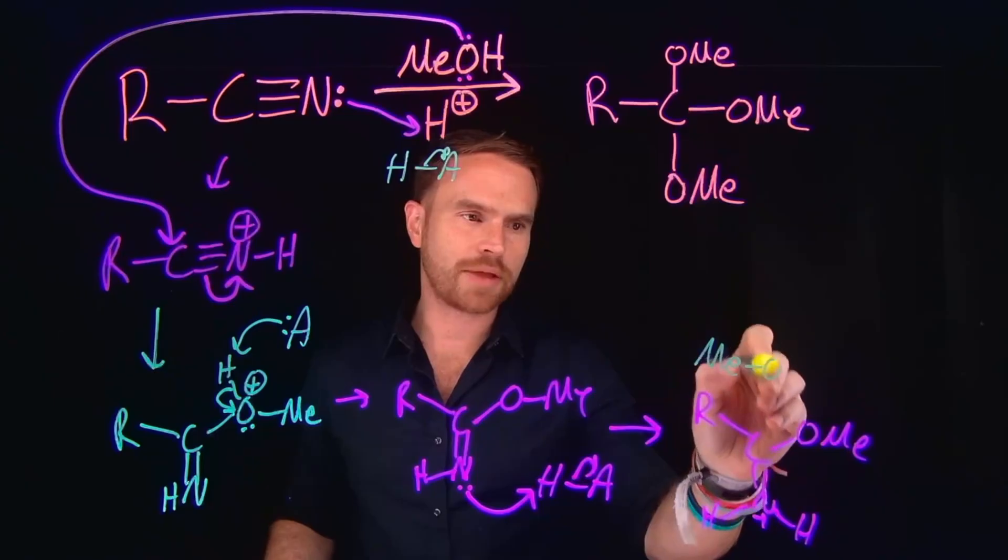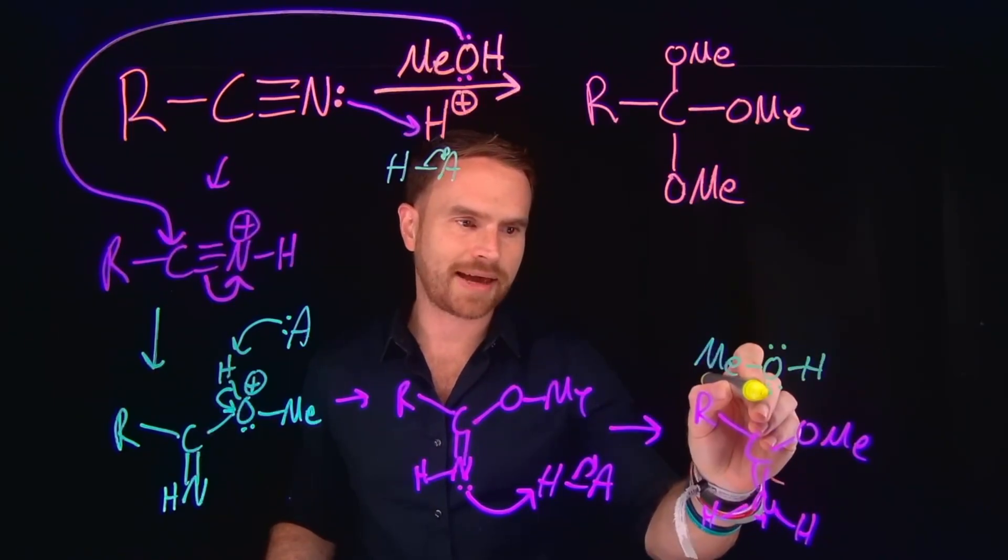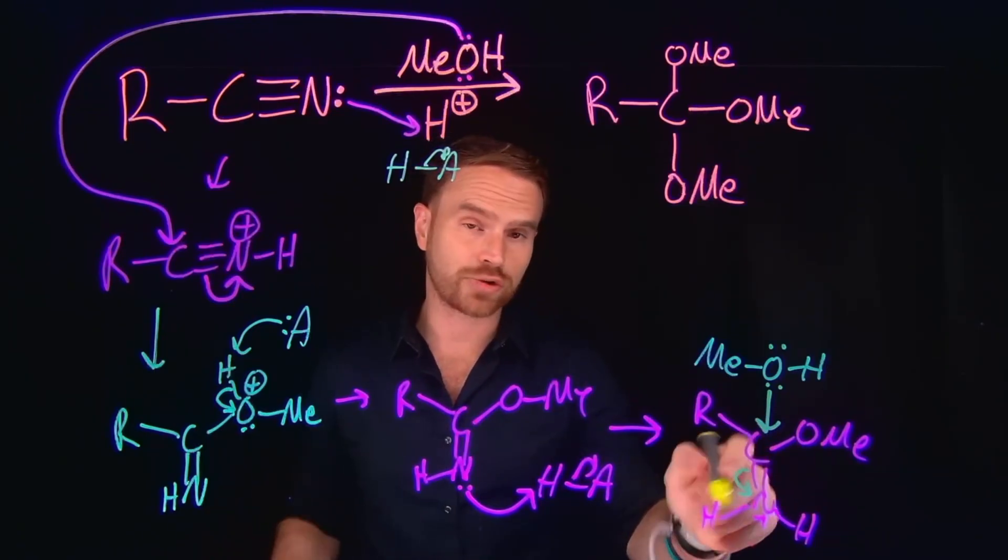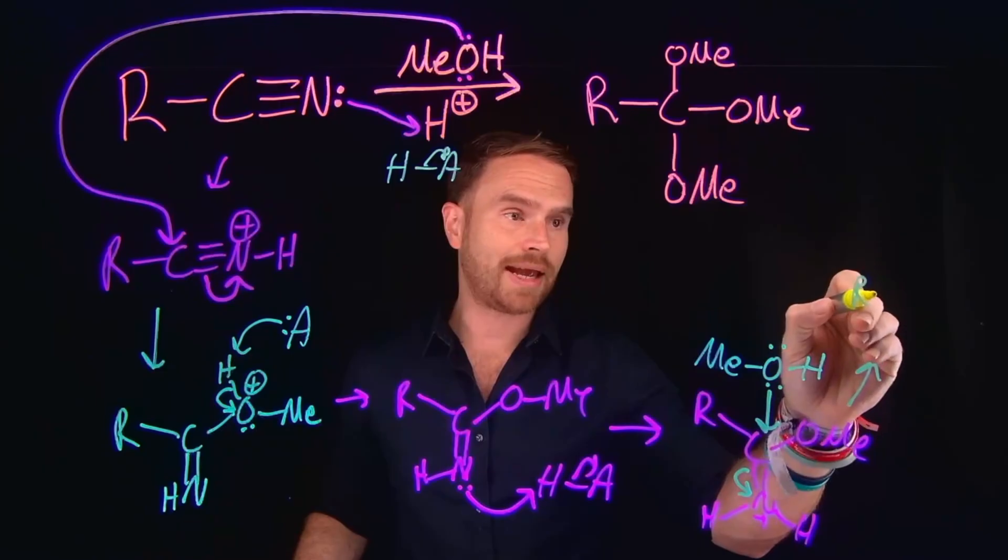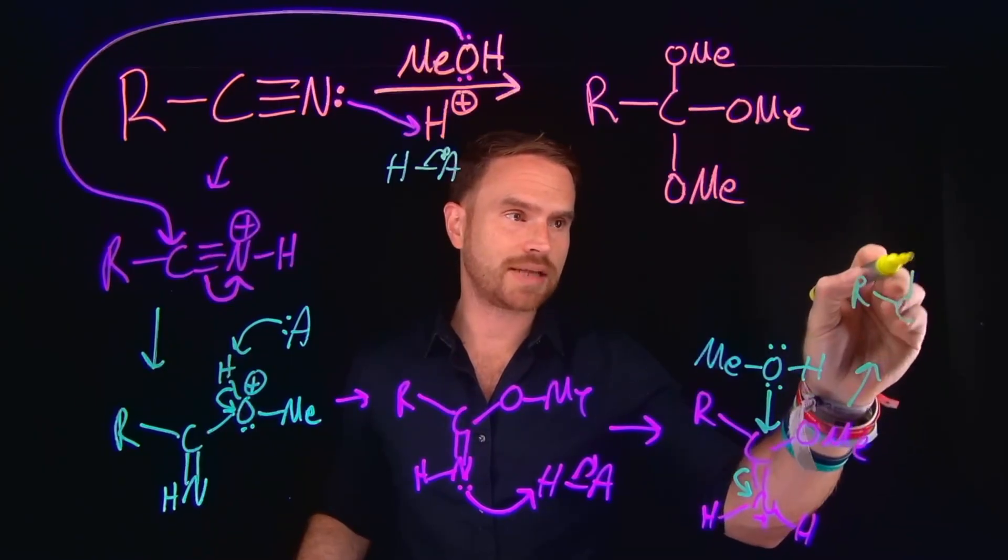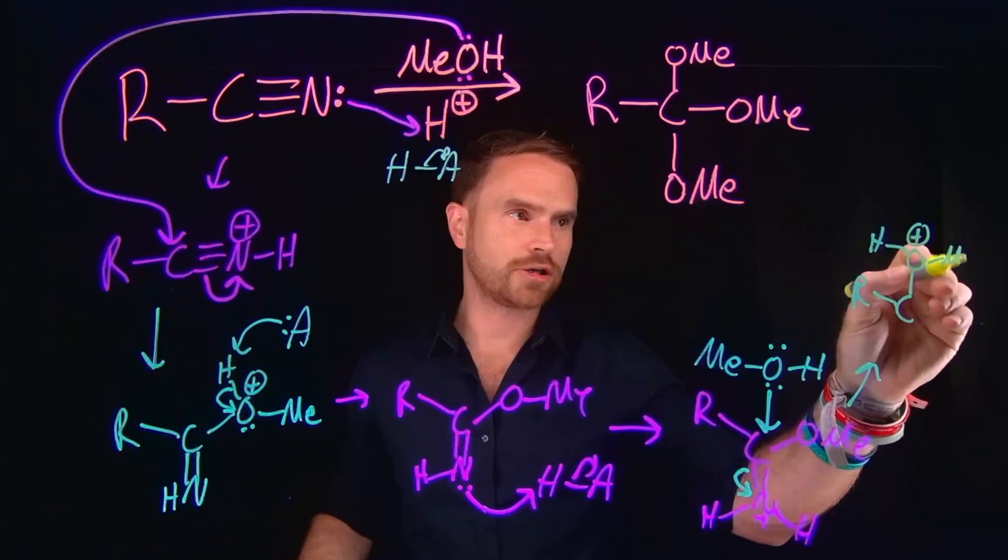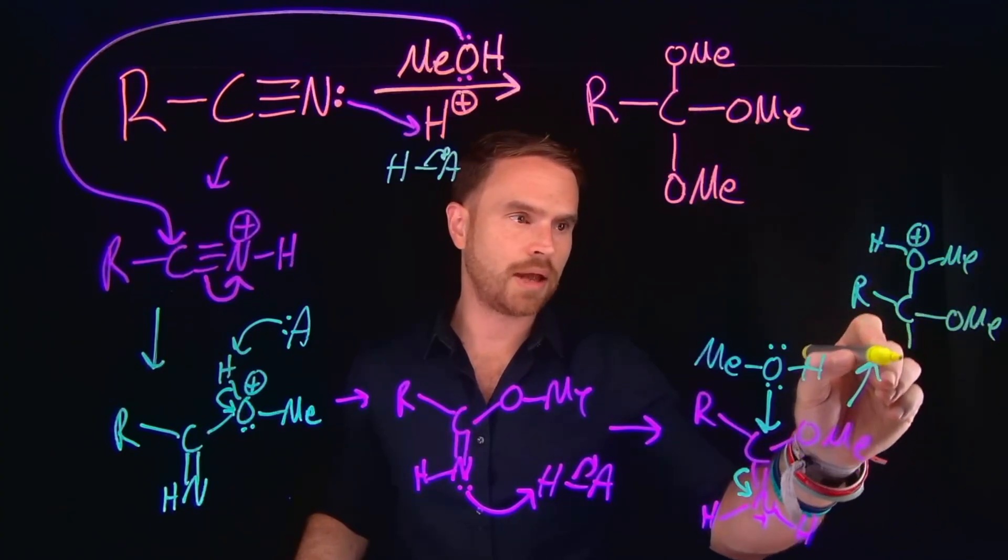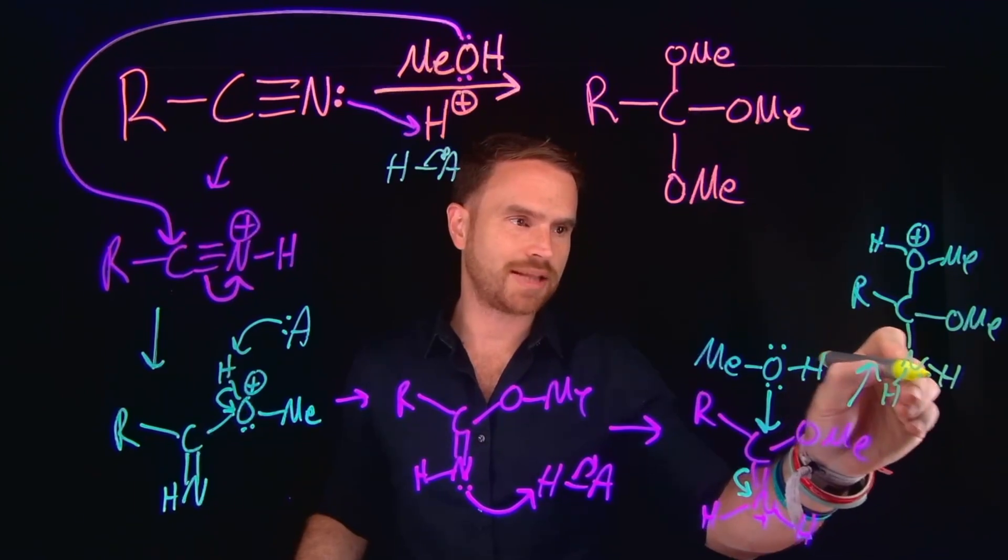So another molecule of methanol can come in and now serve as a nucleophile and attack this carbon, kicking over these pi electrons to make our nitrogen neutral again, but also simultaneously giving us a positively charged oxygen because now we have placed this species here. Now it's going to be positively charged. And that's how we get our second alkoxy group located on this carbon. And now we've generated an amine located at this position that is going to be neutral.